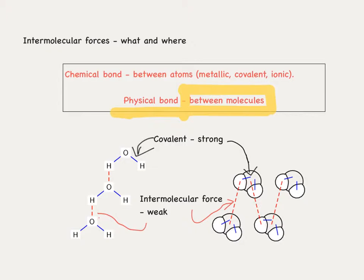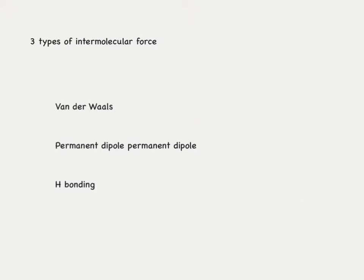There are three types of intermolecular force in the AQA specification: van der Waals forces of attraction, permanent dipole–permanent dipole (sometimes simplified to dipole-dipole), and hydrogen bonding. They're drawn here in order and as we go down, the strength of the intermolecular force increases. Substances with van der Waals forces only tend to have lower boiling points, while those with permanent dipole–dipole and hydrogen bonding tend to have higher boiling points than molecules of a similar size.